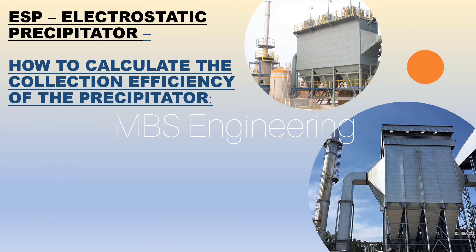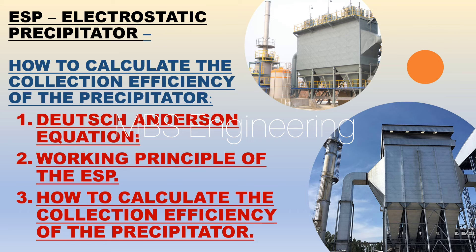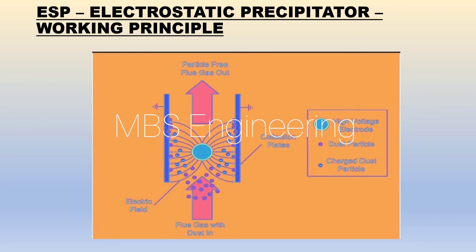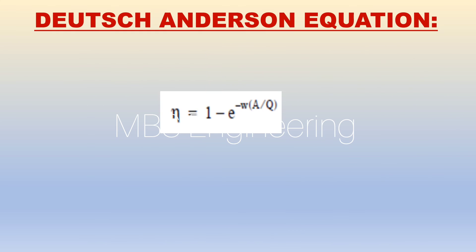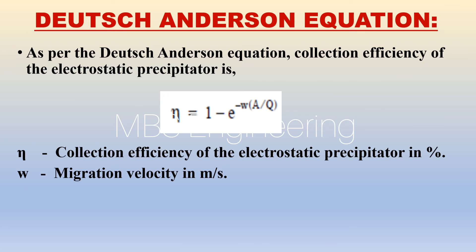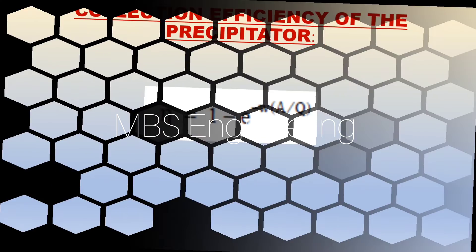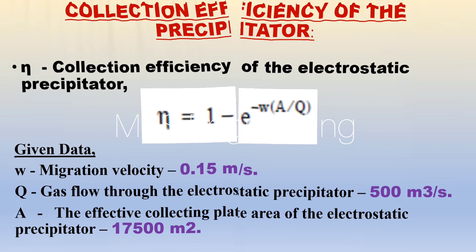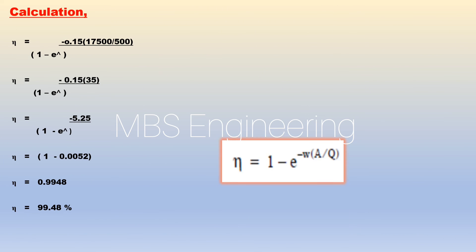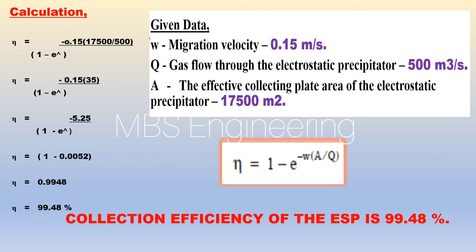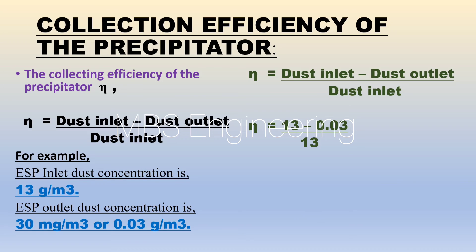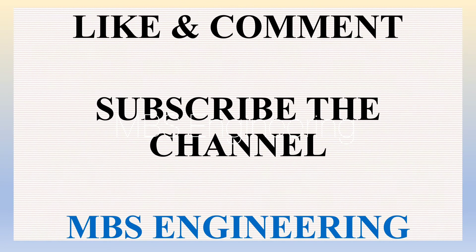I hope everyone understands the Deutsch-Anderson equation and how to calculate the collection efficiency of the precipitator using the Deutsch-Anderson equation, as well as how to calculate the efficiency based on inlet and outlet dust concentration of the precipitator. Thanks for watching. Subscribe to the channel for more videos.